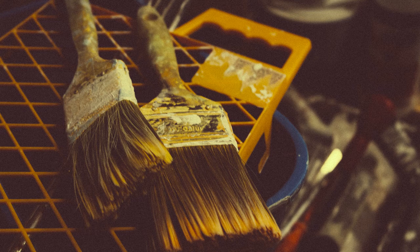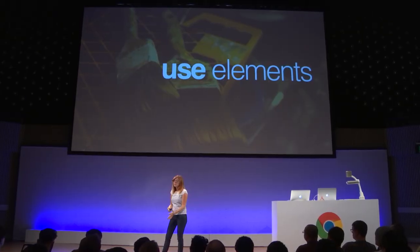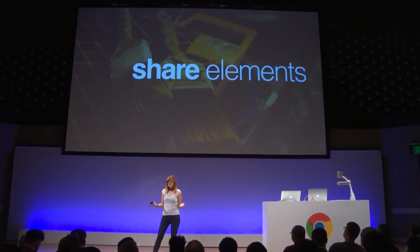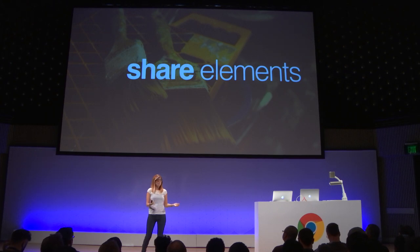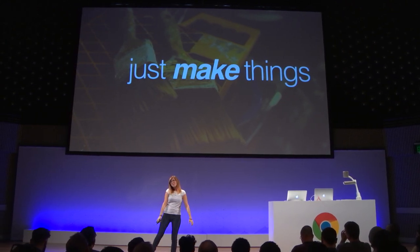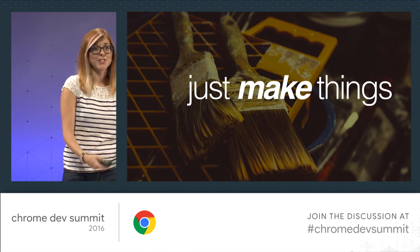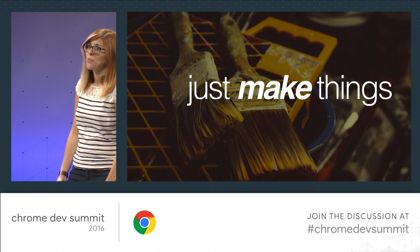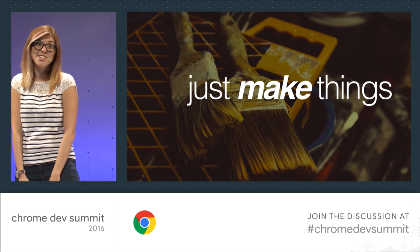What now? Web components are native in the browser. Polymer 2.0 is right around the corner. There's never been a better time to start using web components. Go use an element — drop an emoji-rain element on your blog. Use Polymer, don't use Polymer, use vanilla custom elements, make your own. And if you do, share it — submit it to beta.webcomponents.org so everyone's applications can get better. Most importantly, just make things. Use the platform. Use tools that make your life better and help you write less code. Build awesome things for the web — it's up to you to make the web better.